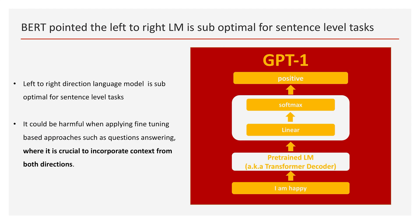Now, the funny story is here. BERT came out after GPT-1 in 2018 by Google, and we know that Google is the inventor of the Transformer. They introduced BERT right after GPT-1, and directly said that GPT, which uses the left-to-right decoder of the Transformer, may be sub-optimal for sentence-level tasks, and it could be harmful when applying fine-tuning-based approaches such as question answering, where it is crucial to incorporate context from both directions.